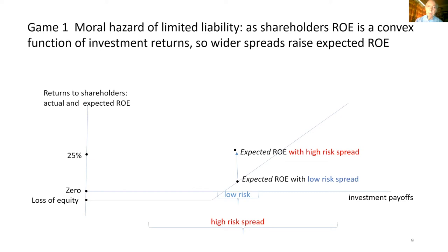A picture of the moral hazard of limited liability — that's game one — is where shareholders' rate of return on equity is a convex function of investment returns. So wider spreads raise expected ROE. On the horizontal axis I've plotted the investment payoffs; on the vertical axis there's the return to shareholders. There's a floor on the losses of shareholders because of limited liability, so we get this convex function. So if you widen the spread, you get a higher expected rate of return for shareholders.